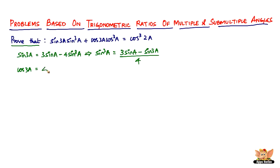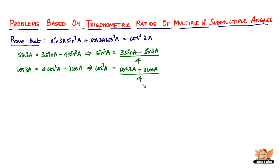Similarly, cos(3a) = 4·cos³(a) − 3·cos(a). Therefore, rearranging, we get cos³(a) = (cos(3a) + 3·cos(a)) / 4. Now we'll use these expressions for sin³(a) and cos³(a) and substitute them into the original expression.